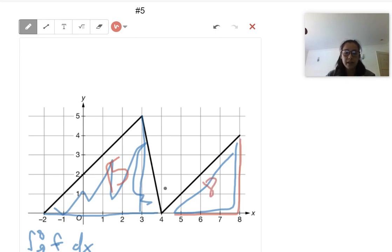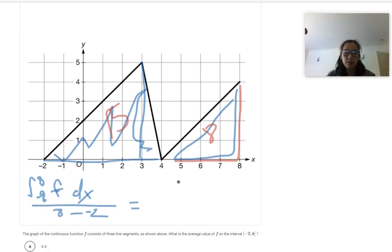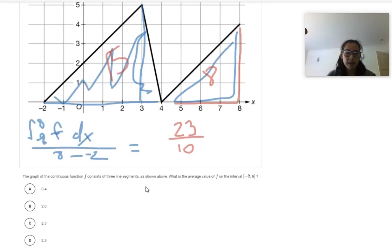So 15 plus eight is going to be 23. So we do 23 divided by eight minus negative two. That's 10. So 23 divided by 10, that's going to get you 2.3. So that would be answer choice B.